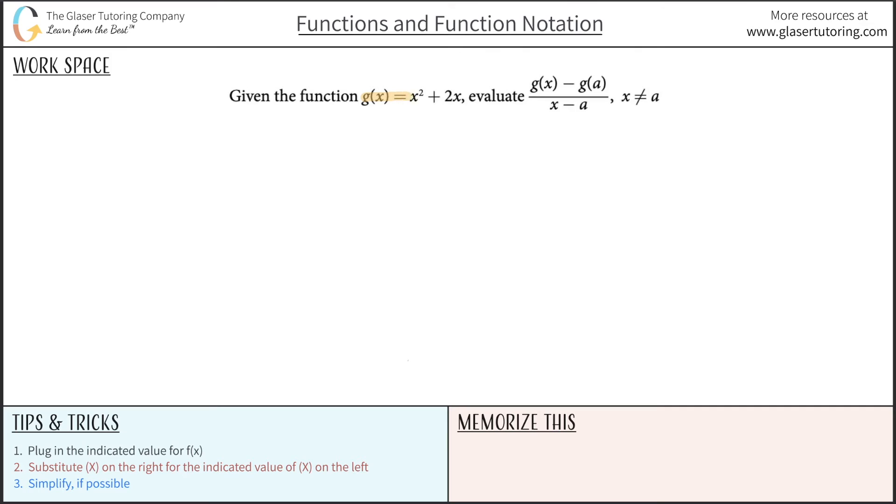Given the function g of x equals x squared plus 2x, evaluate g of x minus g of a divided by x minus a, where x cannot equal a.